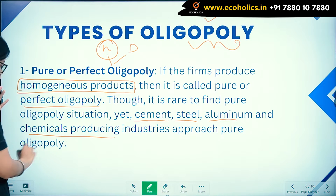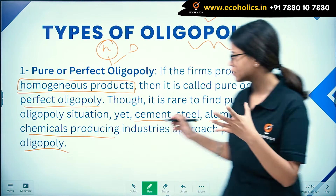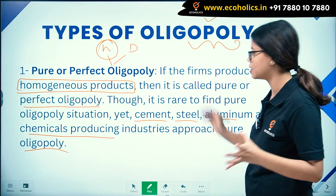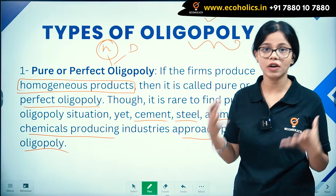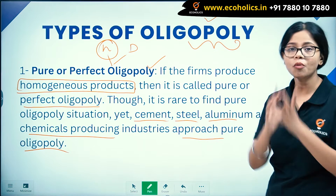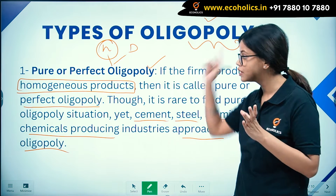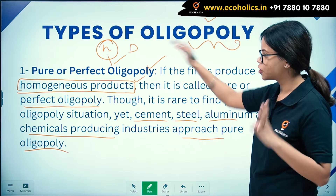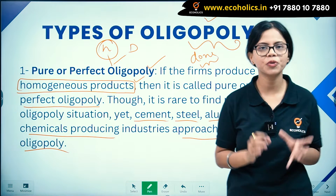Pure oligopoly is actually very rare to find in real life, but cement, steel, aluminium, and chemical producing industries represent or approach pure oligopoly. The striking or differentiating feature of this type is that firms are selling homogeneous products.